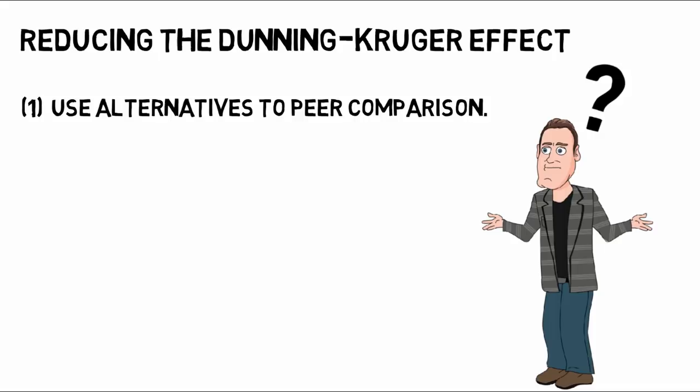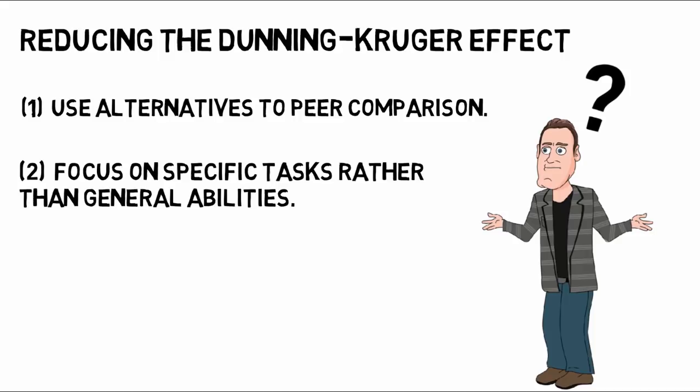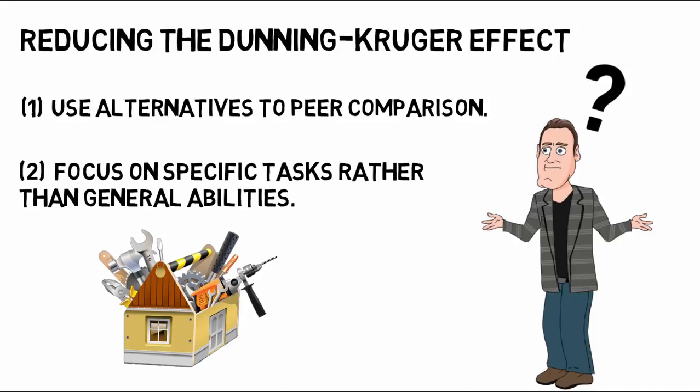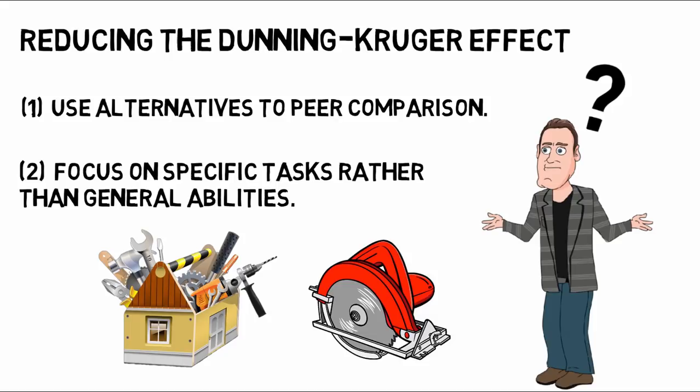Next, break down a goal into the necessary subtasks, focusing on specific rather than general abilities. Research has shown that the more specific a task, the harder it is to maintain an illusion of being better than we actually are. For example, it is easier to make the general claim that you are great at using tools for home repair than it is to make the more specific statement that you are awesome with a power saw.